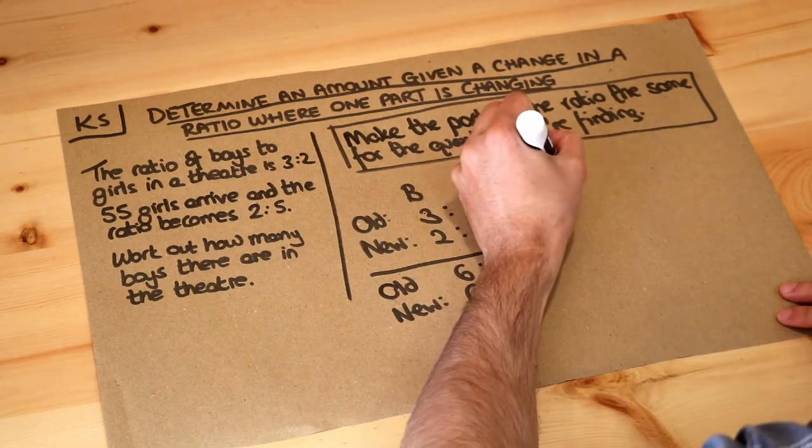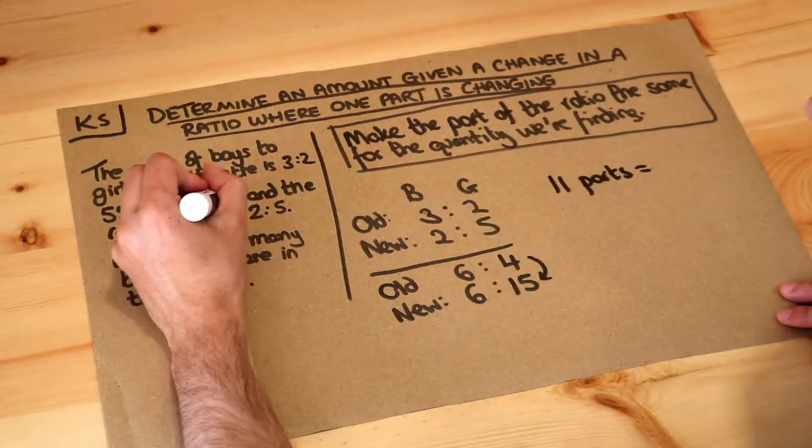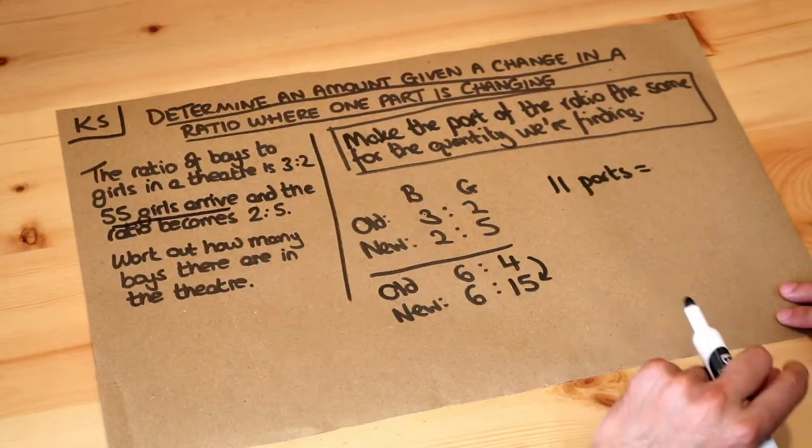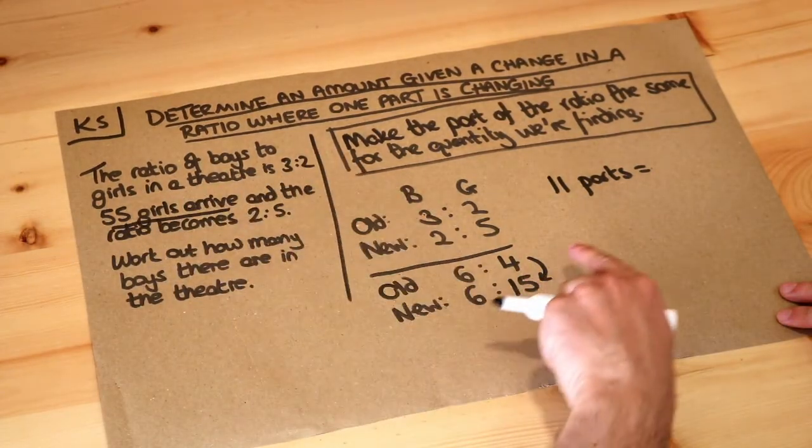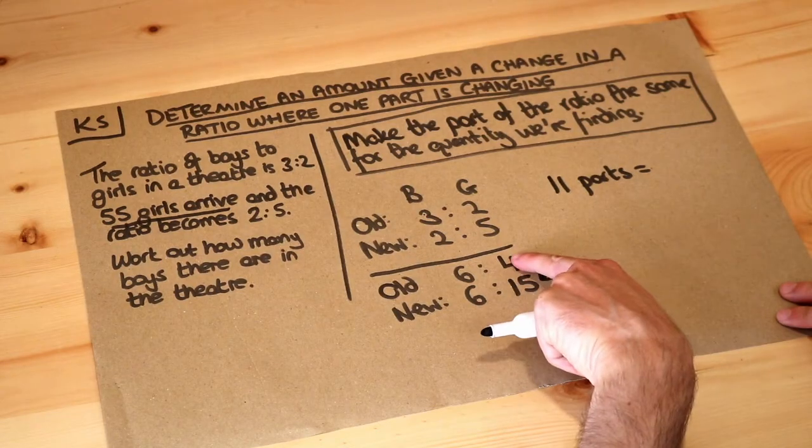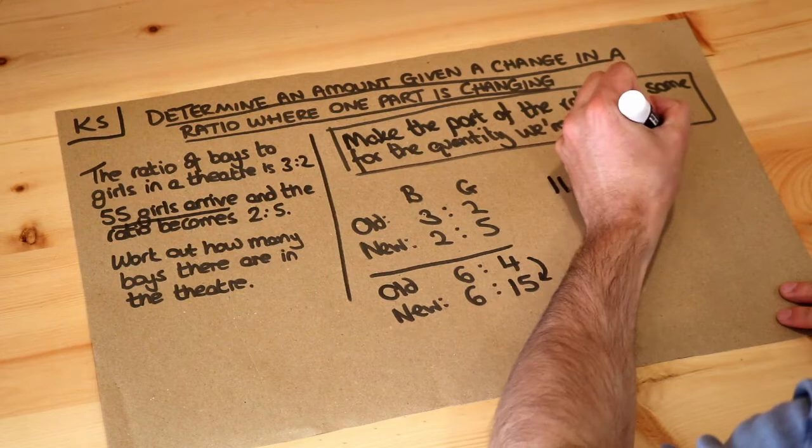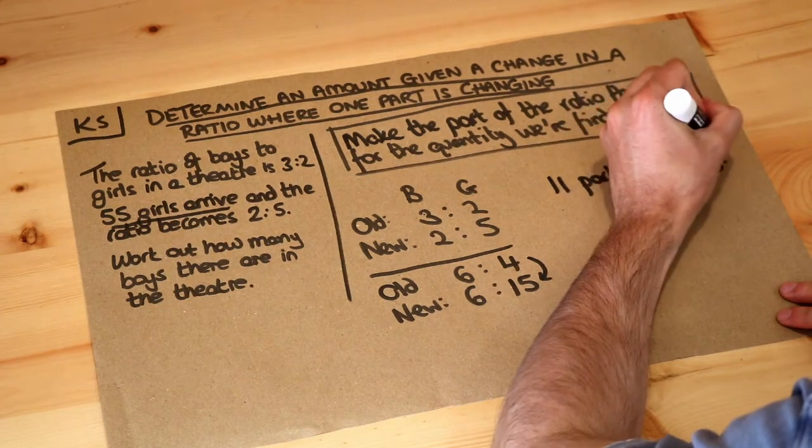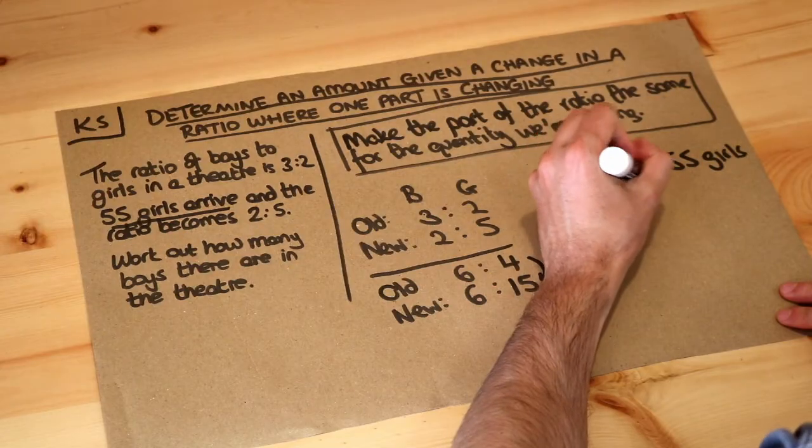So that means the 11 parts difference must be equal to the difference of girls which is 55, because we were told 55 girls arrived. There's a difference of 55 girls and we can see there's a difference in parts when the boys parts are the same of 11 parts. So 11 parts is 55 girls, so that means that one part, if we divide by 11, is equal to 5 people.